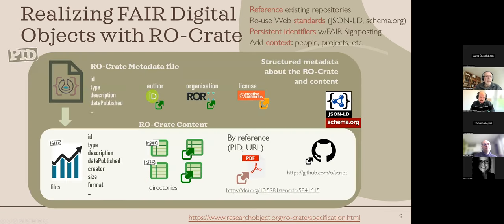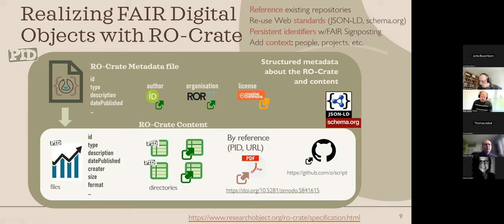Schematically, an RO-Crate is a collection — it has its own metadata, mostly fairly straightforward things like author, license, date, and so on. But then you have a set of content, and the content could be traditional files. It could be references to more complex objects using handles or DOIs. It could be something on the web, or it could be software, more active things.